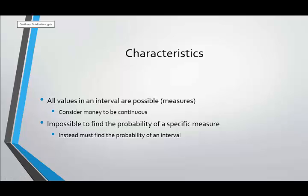Some of the characteristics of a continuous distribution is that all values in an interval are possible, and just by convention we consider money to be continuous even though you could argue that it's discrete to the nearest penny.